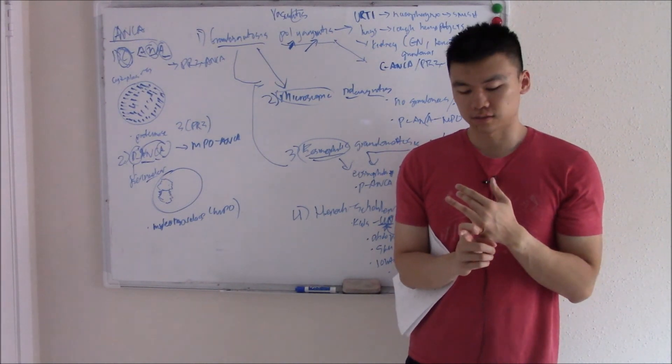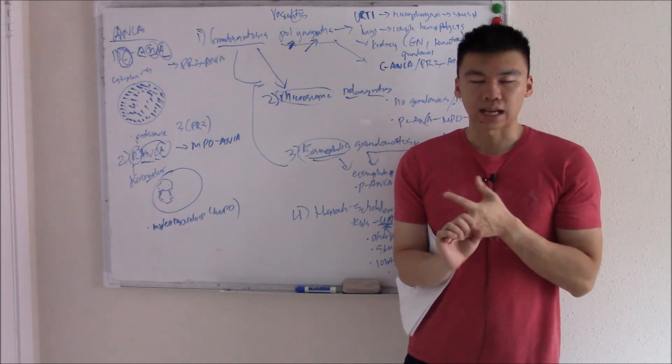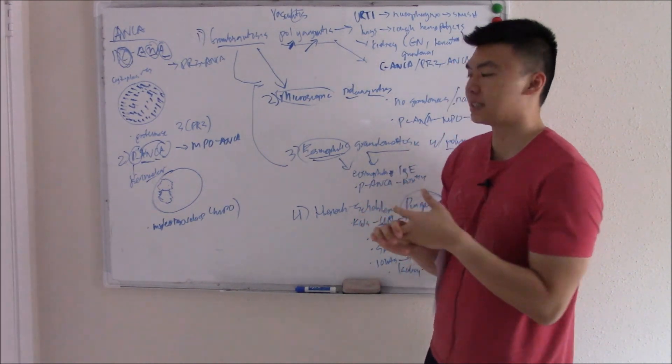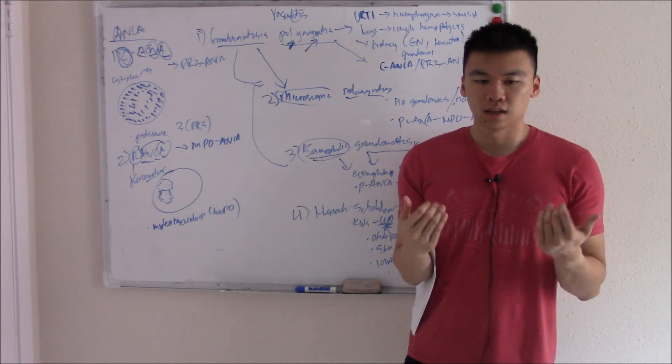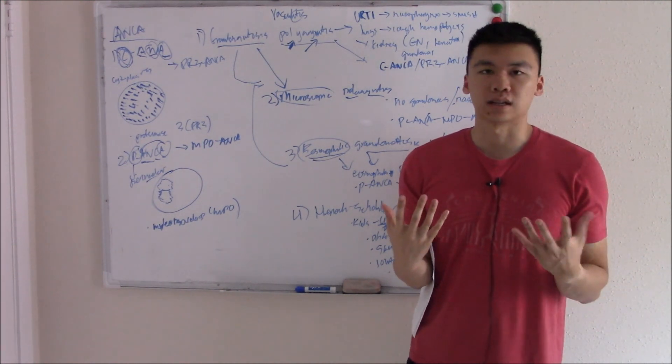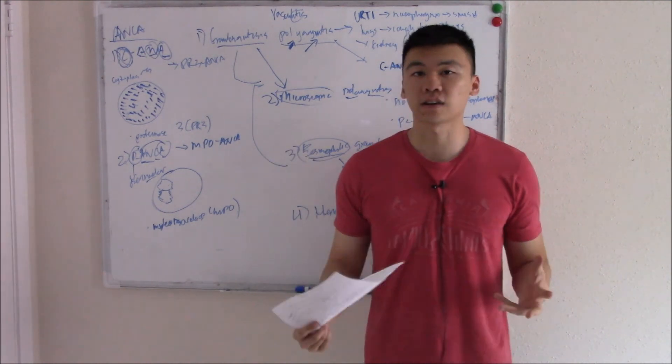That does it for the topic of vasculitis. Know a few key facts for each of them, know why they named it what they named it. And lastly, if you have trouble remembering these facts, synthesize them all into a step-like question, ask it to yourself, and that will make it easier to recognize on the actual test. So hopefully you enjoyed it, hopefully it clarifies some things. Thanks.